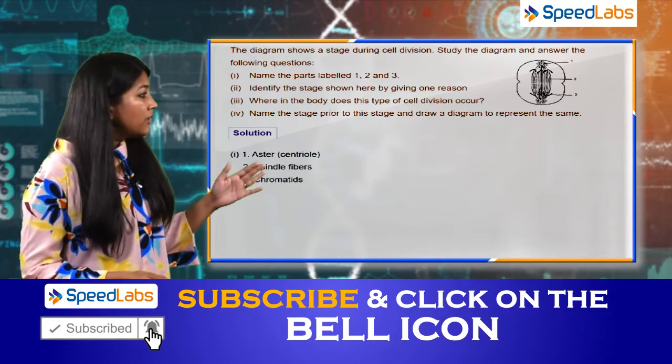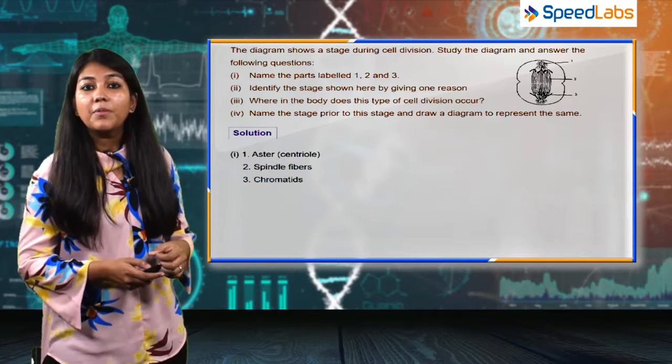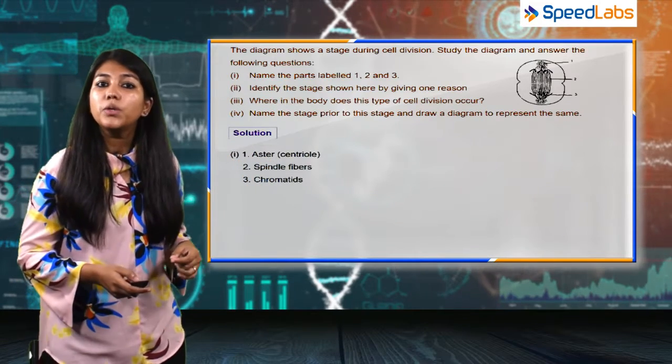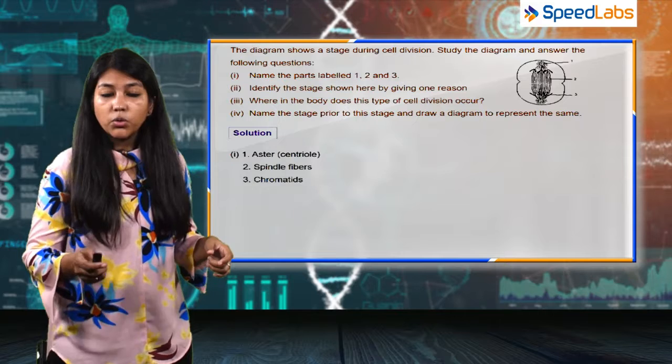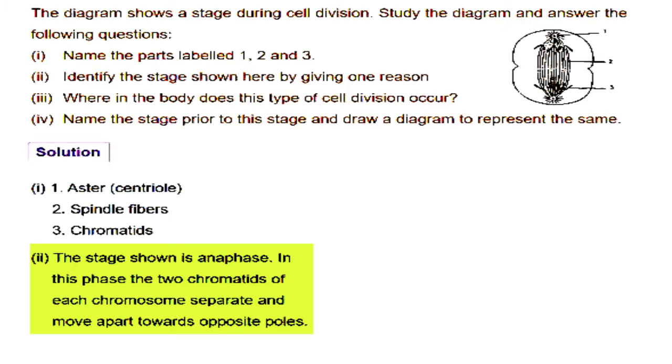In the diagram we can clearly see that the sister chromatids are separating and moving towards the opposite poles. The answer is anaphase. In this phase, the two chromatids of each chromosome separate and move apart towards the opposite poles.